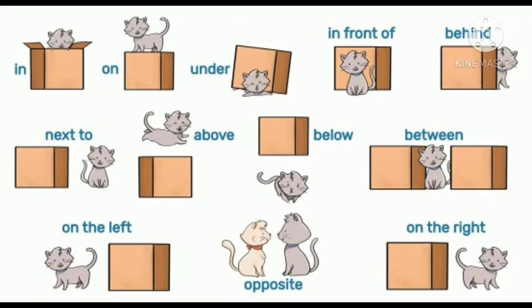Look at the first picture — the cat is in the box. Next, cat is on the box. Then cat is under the box. Then in front of — cat is in front of the box. The next ones: above, then below, between, on the left, opposite, on the right. All these prepositions show position.